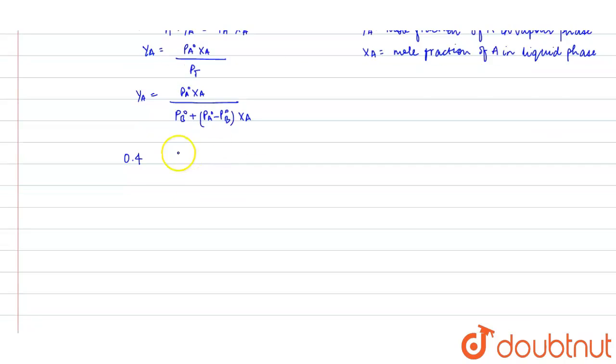The value of P_A° given in the question is 0.4 atm × X_A divided by P_B° (1.2) plus (0.4 - 1.2) × X_A. By solving this expression we will get the value of X_A